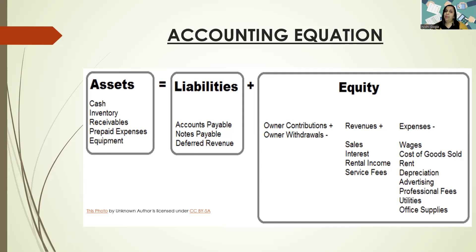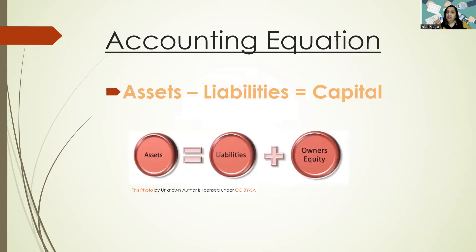That's because of double entry bookkeeping. For each and every transaction, there are two entries in your books of accounts. For each and every debit, there is an equal and opposite corresponding credit. Assets are always equal to liabilities plus capital. Or if you rearrange the equation, assets minus liabilities equals capital — that's the money which the owner has invested in the business.